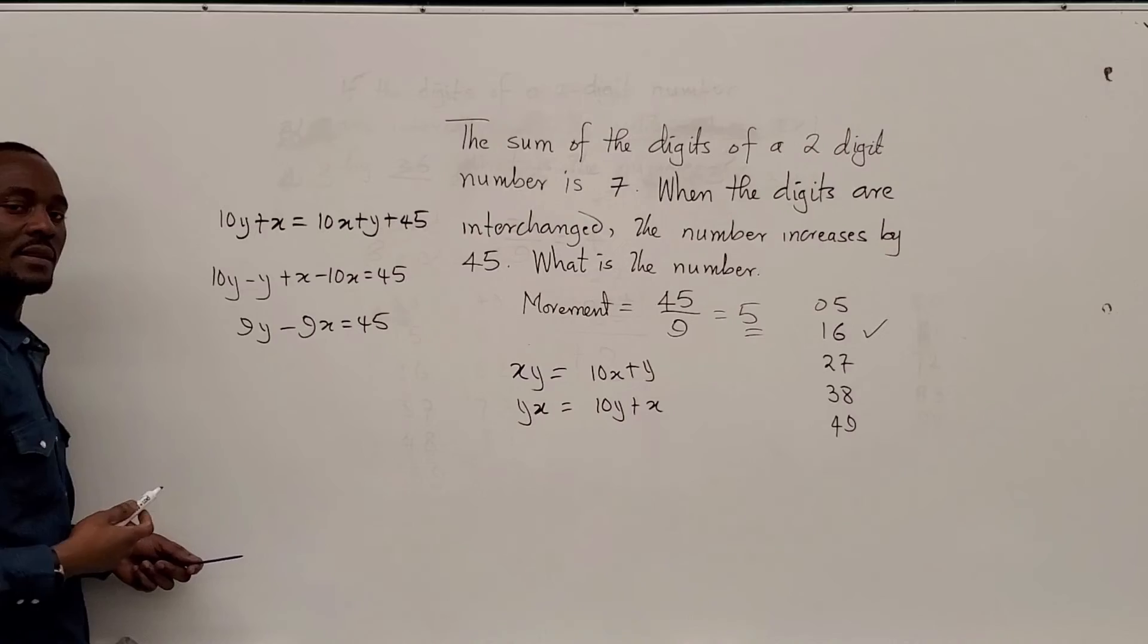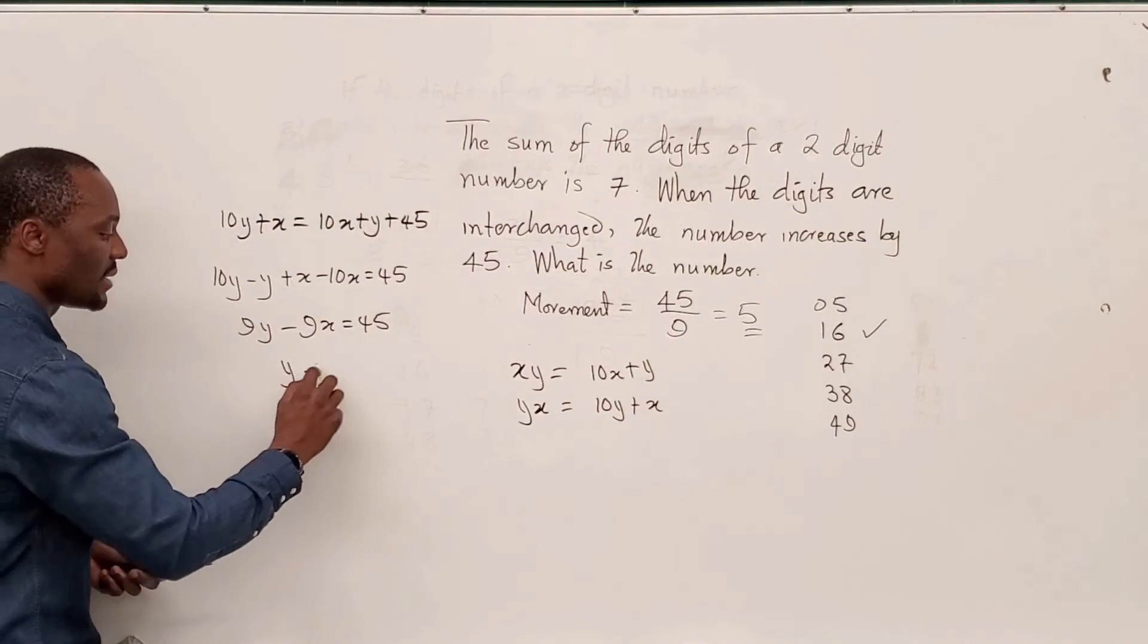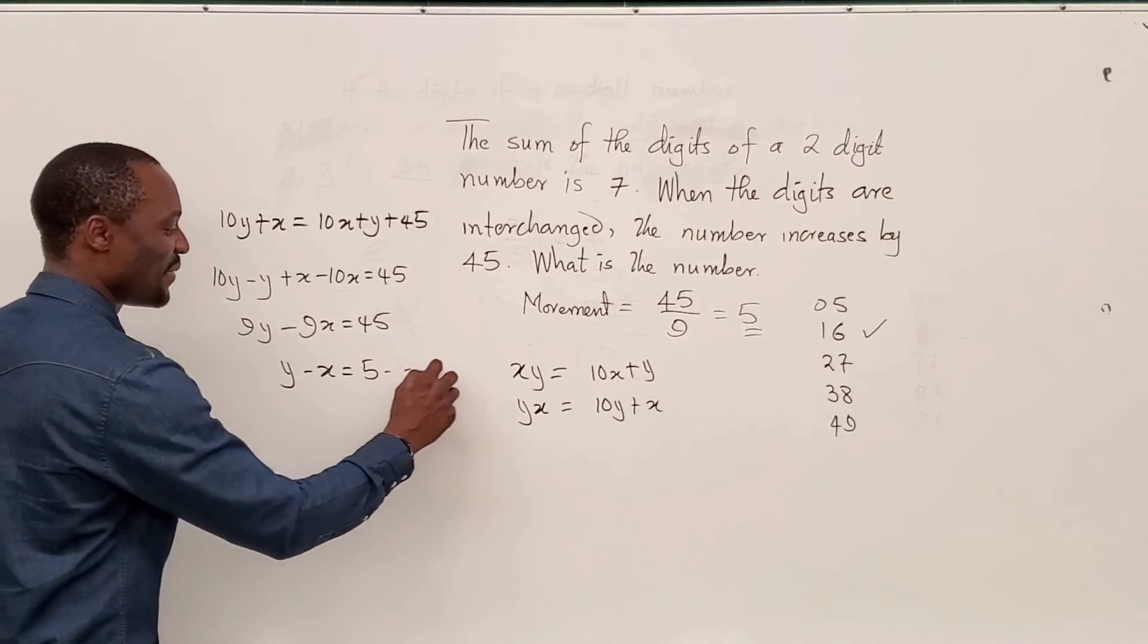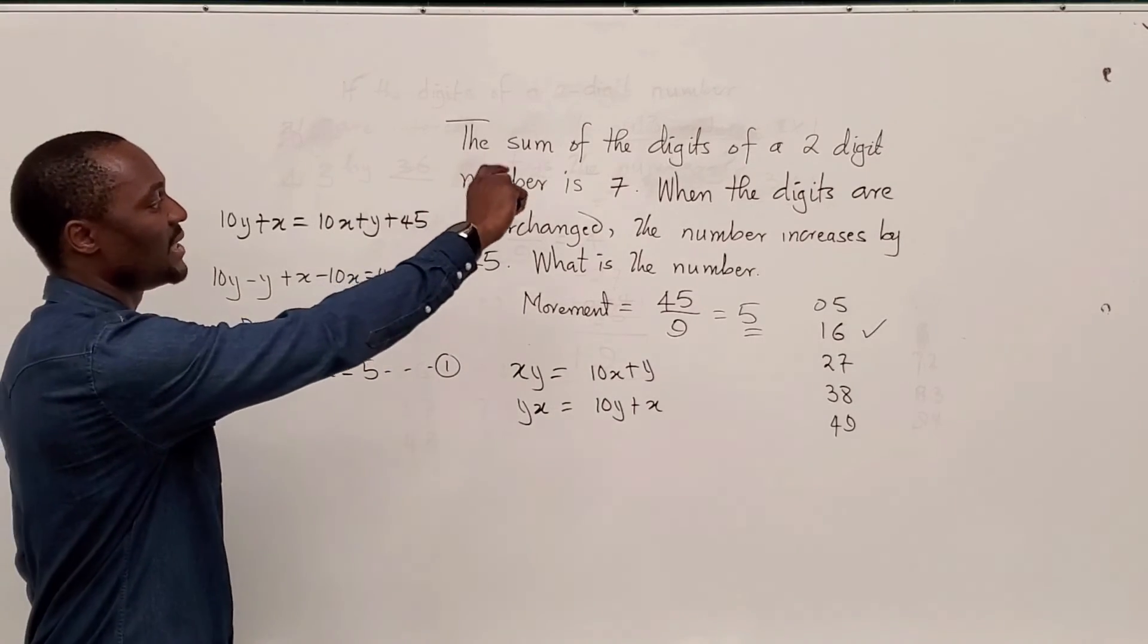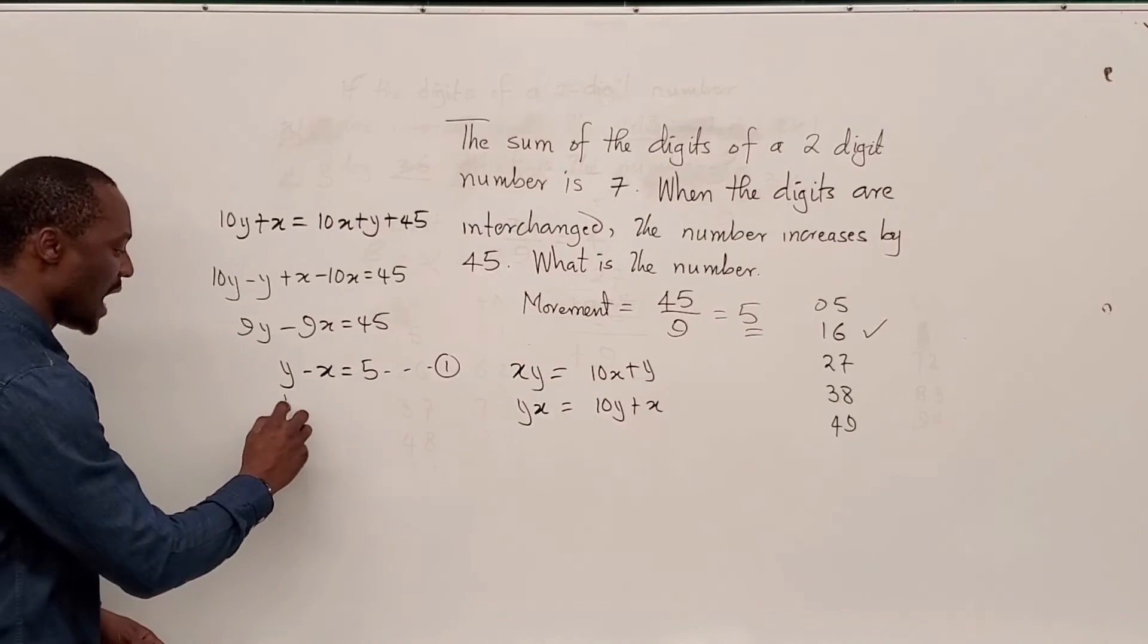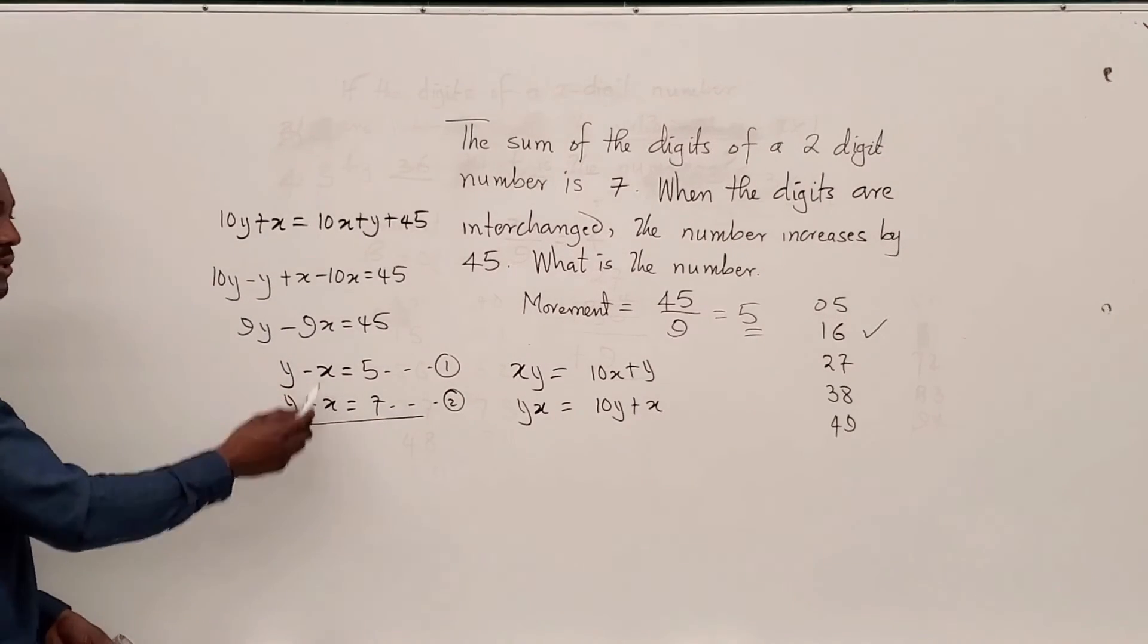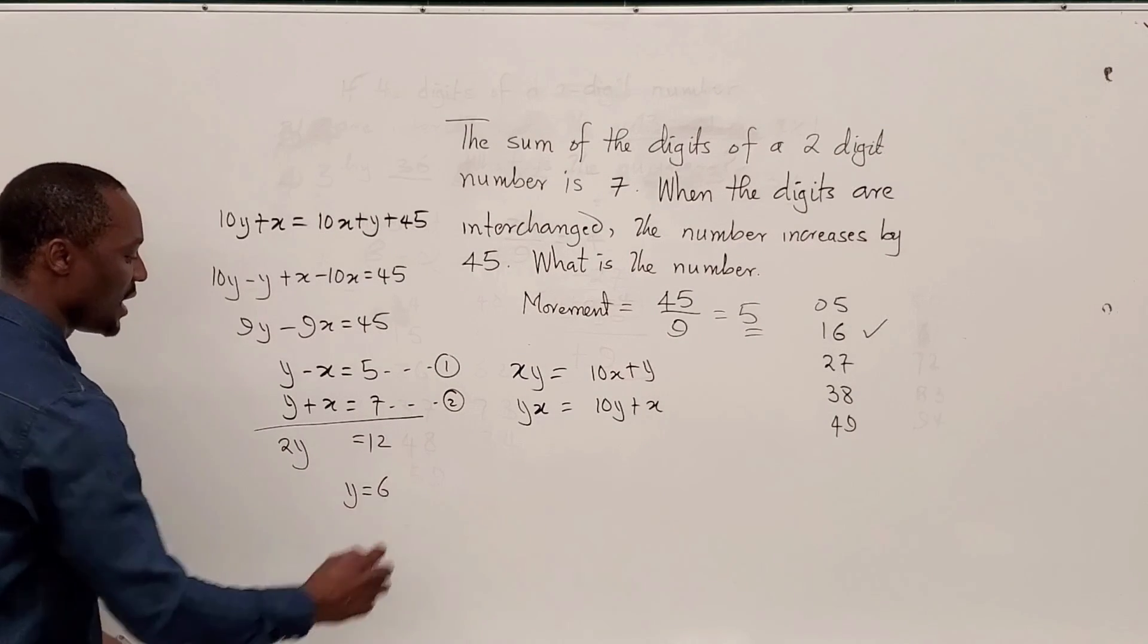Now, there's a common factor of 9. Divide through by 9 you'll end up with Y minus X equals 5. Which is that 5? So this is the difference. That's equation 1. The second equation tells us that the sum of the digits is 7. That's the first sentence in the question. So the sum of the digits when you add Y to X will be equal to 7. That's equation 2. You can use the elimination and solve this. Add the two digits together. You get 2Y equals 12. That tells you Y equals 6.